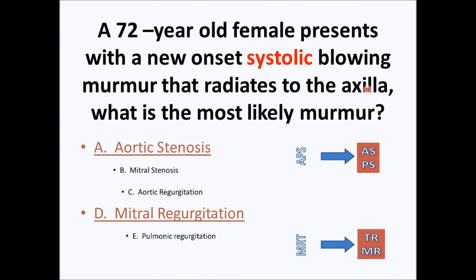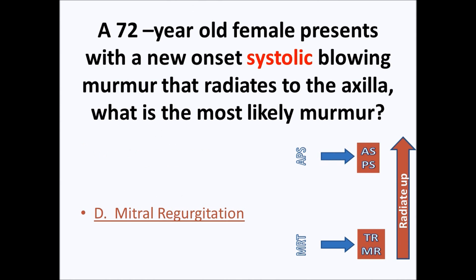The question says it radiates to the axilla. Anatomically, the aortic position is the right second intercostal space — a murmur from there would radiate up to the carotids. But since this one radiates to the axilla, we know we're listening at the mitral position, and a murmur from the mitral position radiating upward goes to the axilla. Therefore, the answer is mitral regurgitation.